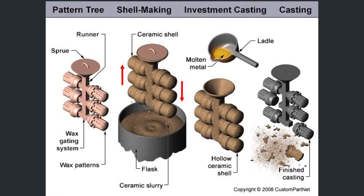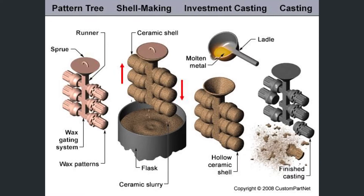The second expandable mold casting process is investment casting. This process is used to produce precise products, which helps reduce wastage of material, energy, and repeated machining. It can produce complex parts and many components at a single time. In this process, patterns are prepared with the help of wax.